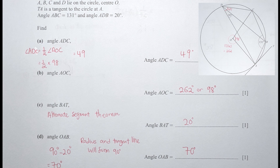For part c, angle BAT equals ADB because of the alternate segment theorem, so it is 20 degrees. For the last part, OA is a radius joining with the tangent, forming 90 degrees. By subtracting 20 degrees from 90, you get the balance as 70 degrees for angle OAB.